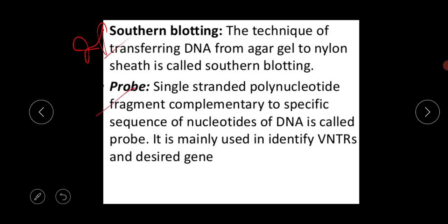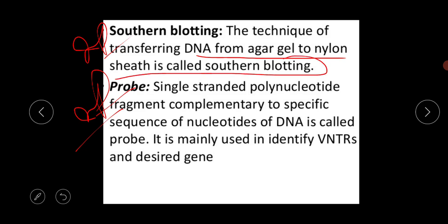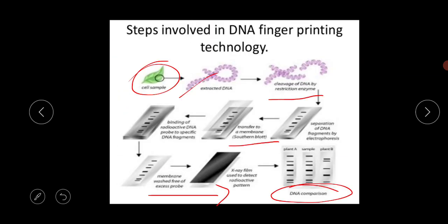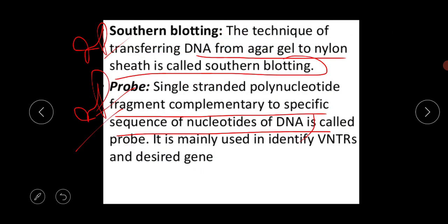Key definitions for one or two mark questions: Southern blotting — the technique of transferring DNA from agar gel to a nylon sheet. Probe — a single-stranded polynucleotide fragment complementary to a specific sequence of nucleotides of DNA, mainly used to identify VNTRs and the desired genes.